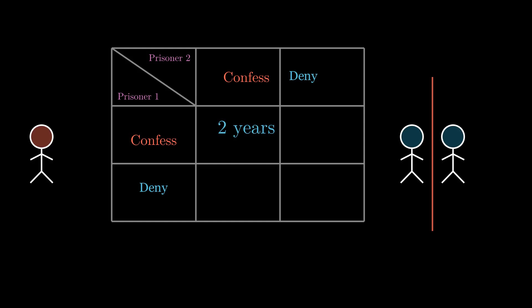If one of them confesses but the other denies the crime, the one confessing gets to go loose, while the one who denies the crime gets a sentence of three years for lying to the authorities. If both of them deny the crime, they are just charged of minor arms possession and just given one year in jail.